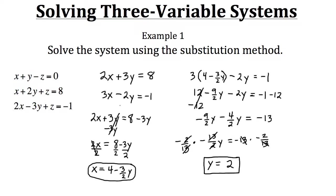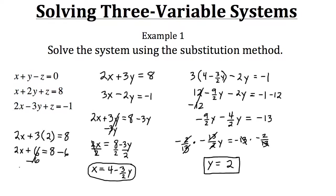Now we plug y equals two into the top equation of our two-variable system. We have two x plus three times two, which is six, equals eight. Subtracting six from both sides leaves us with two x equals two. Dividing both sides by two, x equals one. So we know the solution to this system has an x value of one.